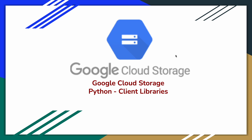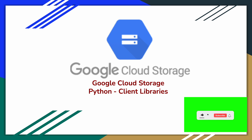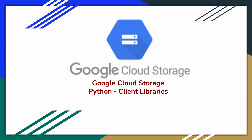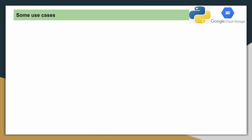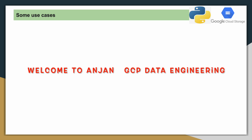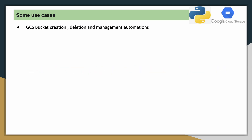Welcome to GCP Data Engineering. In this video we are going to learn how to use Python client libraries to create Google Cloud Storage buckets, manage buckets, and manage storage objects with respect to Google Cloud Storage buckets. We'll see some use cases for why we have to use client libraries — we can fully automate the process of creating buckets, uploading objects, downloading objects, and deleting buckets and objects using these client libraries.